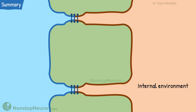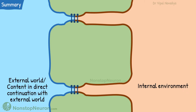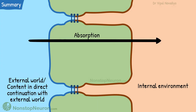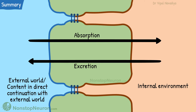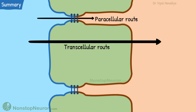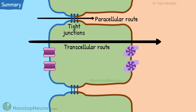Let's have a quick summary. The epithelium separates the internal environment of our body from the external world or content in direct continuation with the external world — for example, the lumen of the intestine or renal tubule. Transport across the epithelium is required to absorb substances into the body or to excrete them out of the body. It can occur by the transcellular or paracellular route. Transcellular movement occurs through transport proteins on the cell membrane; for this, apical and basolateral membranes contain a distinct set of transport proteins to allow net movement of a substance in the desired direction, a distinction maintained by junctional proteins. Paracellular movement occurs through the space in between the cells, and the extent of this movement depends on how tight the junctions are.